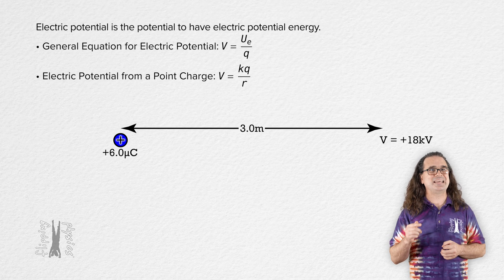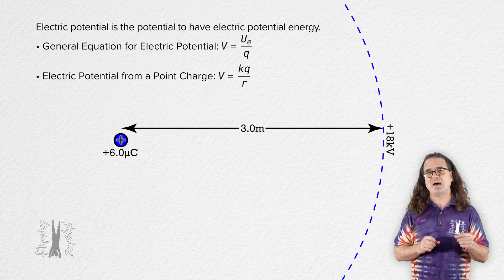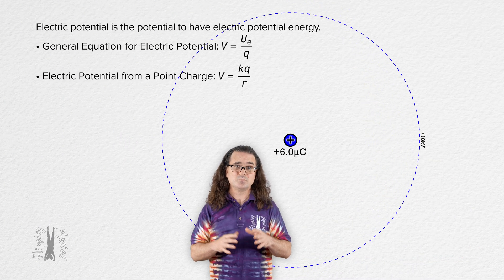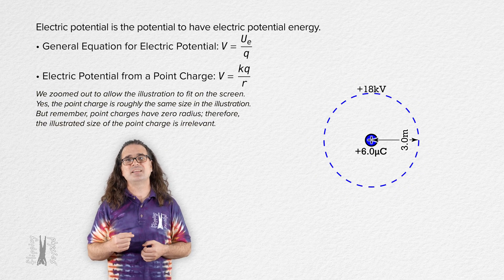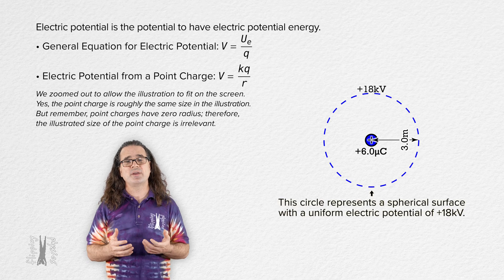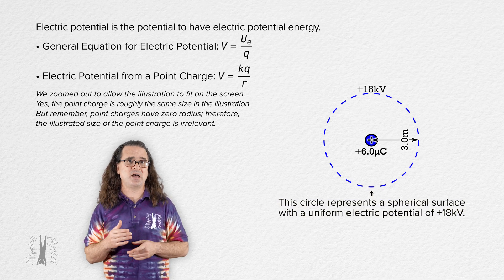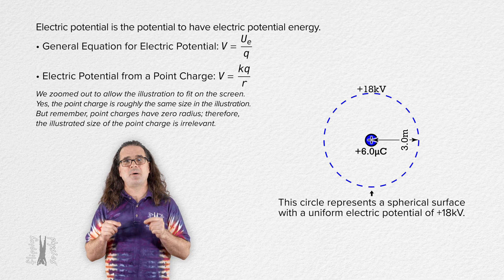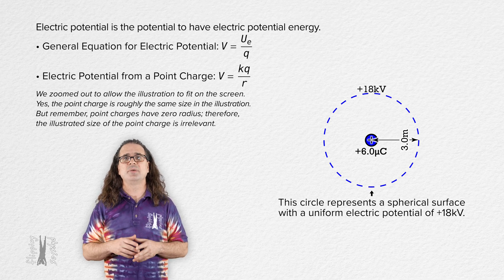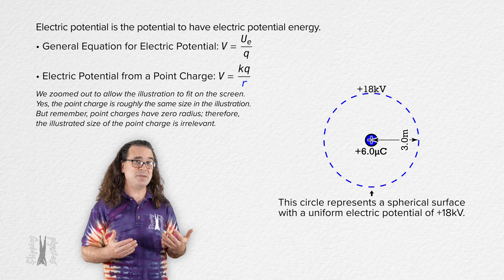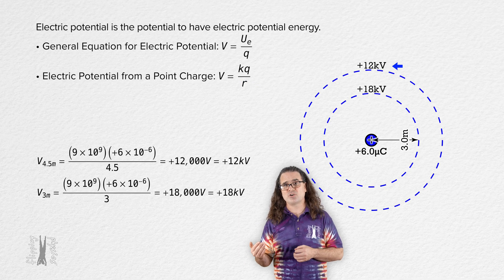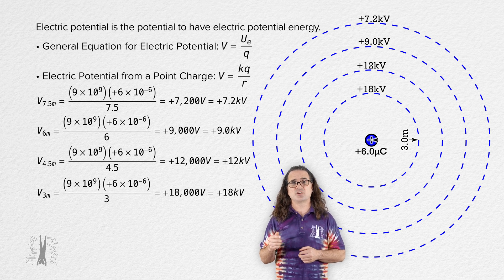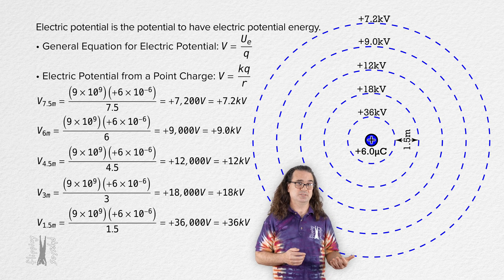Notice that means there is a concentric spherical surface around the positive 6.0 microcoulomb charge which has an electric potential of positive 18 kilovolts. It looks like a circle on the screen; however, it is actually a three-dimensional spherical surface with a radius of 3.0 meters surrounding the charge, and on that entire spherical surface the electric potential equals positive 18 kilovolts. Because r is in the denominator of the equation, as the location gets farther from the charge the electric potential decreases, and as it gets closer the electric potential increases.